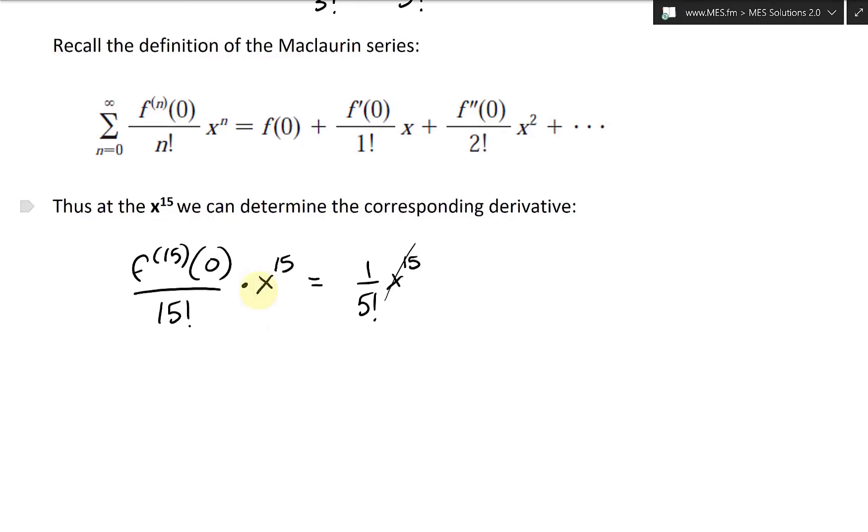So this means we could just cancel this out and then we can move this over to the other side. So what that means is the f of 15, the 15th derivative at x equals zero is equal to 15 factorial over 5 factorial.